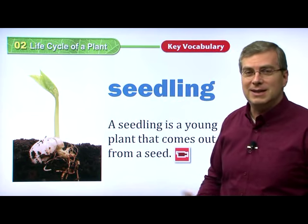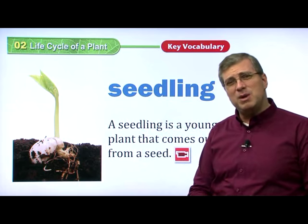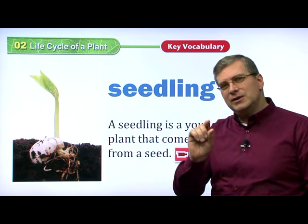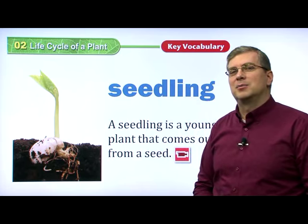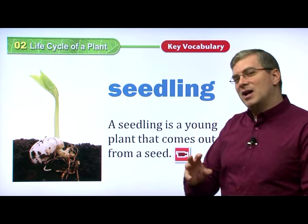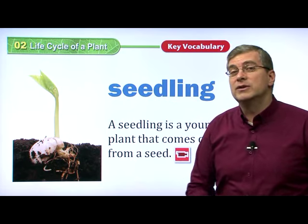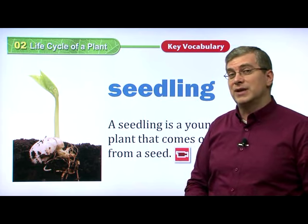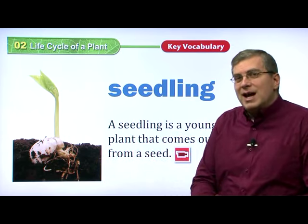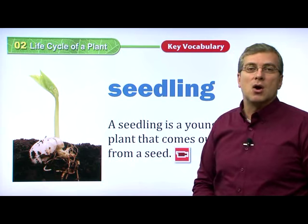Seedling. A seedling is a very young plant, like a baby plant that comes out from a seed. It's a very small plant that comes out. It's really amazing if you have time and you can watch it, but usually we don't have that kind of time. It takes some time, but if we use a special video technique, we take a picture once in a while, then we put it all together. It's very amazing to watch a seedling grow from a seed.